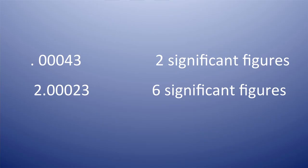Rule four: all zeros to the right of a decimal point and to the left of a non-zero digit in a decimal fraction are not significant. For example, 0.00043 has only two significant figures, but 2.00023 has 6 significant figures. In 0.00043, the three zeros are right of the decimal point but not between any two non-zero digits, hence they are not significant, so it has two significant figures. In 2.00023, the zeros are to the right of the decimal point but in between two non-zero digits, hence these zeros are significant.